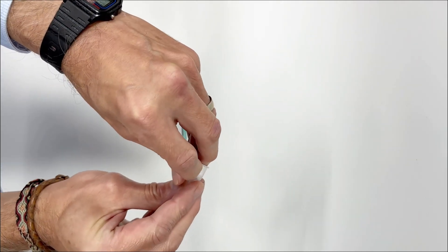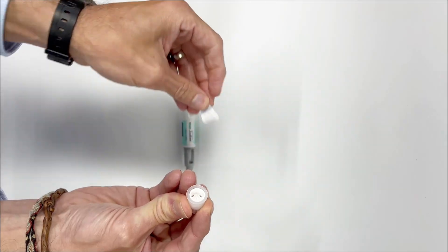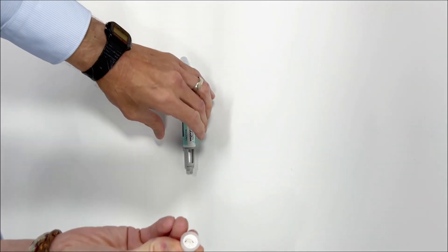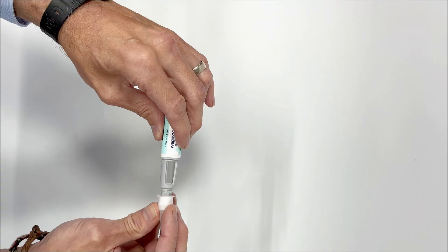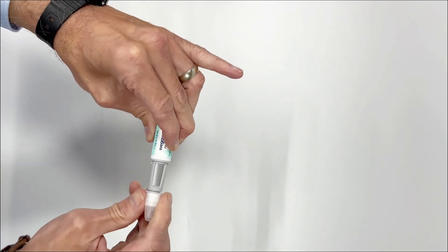Take one of the needles from the box and take off the seal. Push the needle straight into the pen, twisting until it is firmly in place.